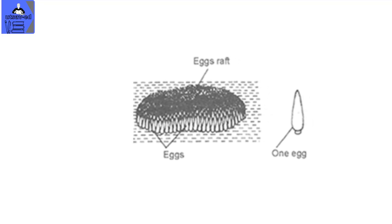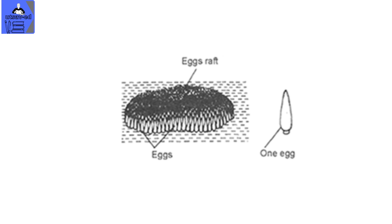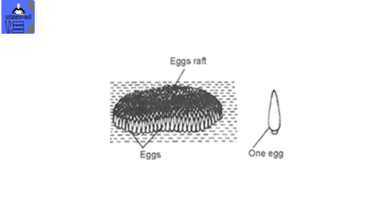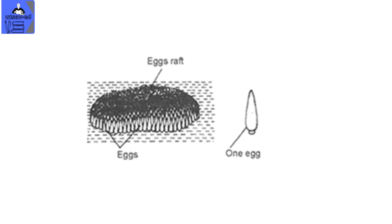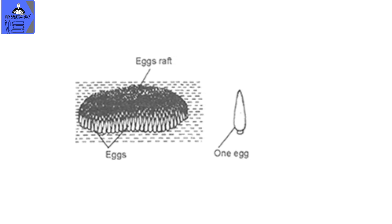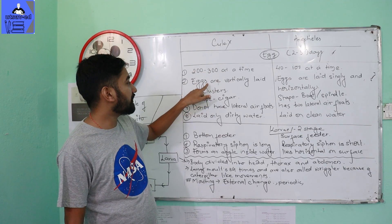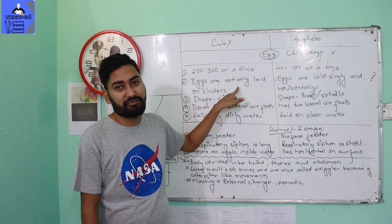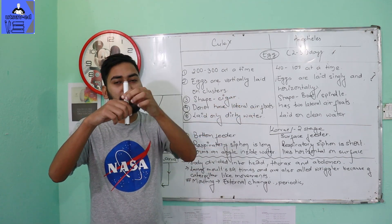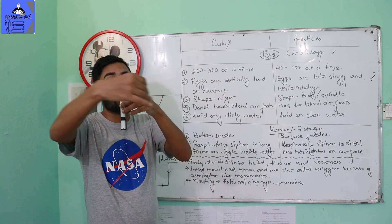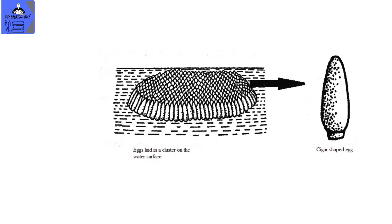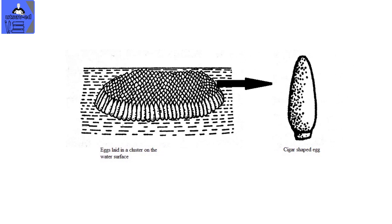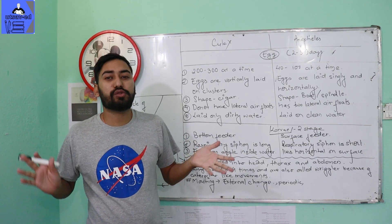Mosquitoes lay 200 to 300 eggs at a time, obviously in a cluster. The eggs are laid in a cluster, and the eggs are arranged in a vertically layered pattern. This is cigar shaped.